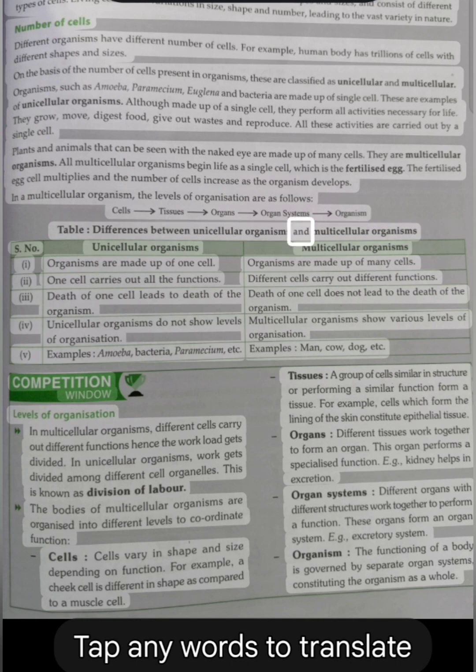Table: differences between unicellular organisms and multicellular organisms. Unicellular organisms: I. Organisms are made up of one cell. II. One cell carries out all the functions. III. Death of one cell leads to death of the organism. IV. Unicellular organisms do not show levels of organization. V. Examples: amoeba, bacteria, paramecium, etc. Multicellular organisms: Organisms are made up of many cells. Different cells carry out different functions. Death of one cell does not lead to the death of the organism. Multicellular organisms show various levels of organization. Examples: man, cow, dog, etc.